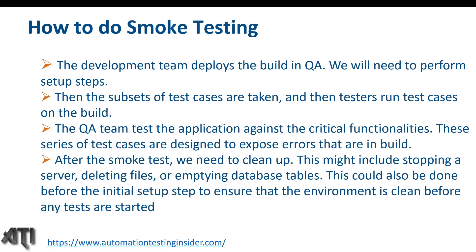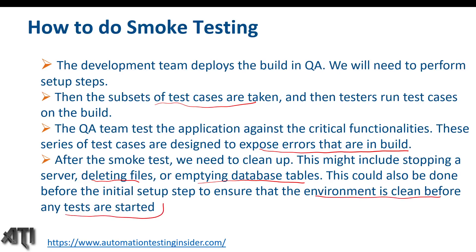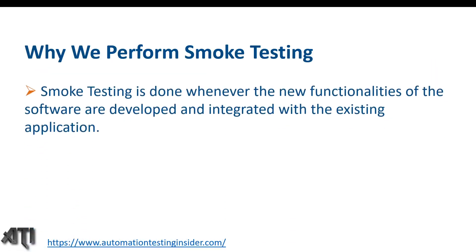How do we do smoke testing? The development team deploys the build in QA; we perform setup steps, then a subset of test cases are taken from acceptance test cases. Testers run these test cases on the build — the QA team tests the application against critical functionalities. These test cases are designed to expose errors in the build. After the smoke test, we clean up — this might include stopping the server, deleting files, or emptying database tables to ensure the environment is clean before any tests are started.